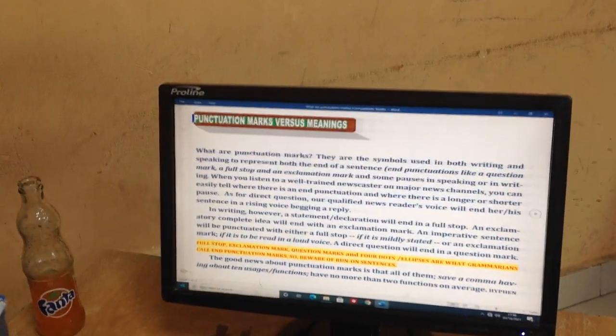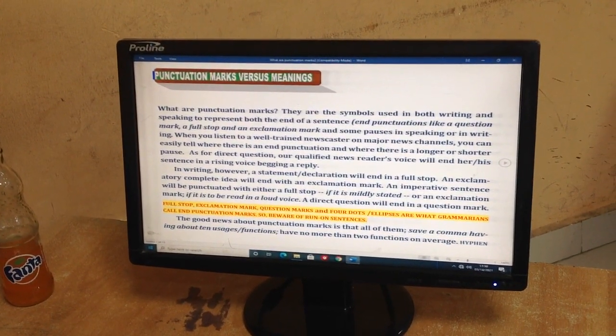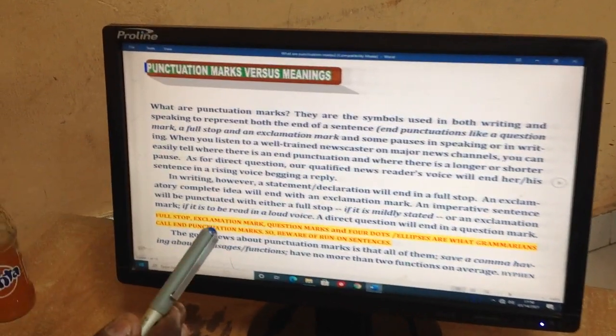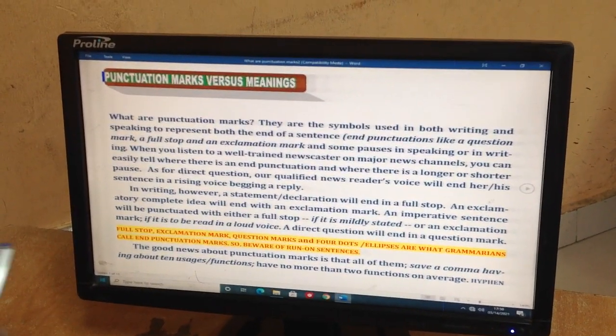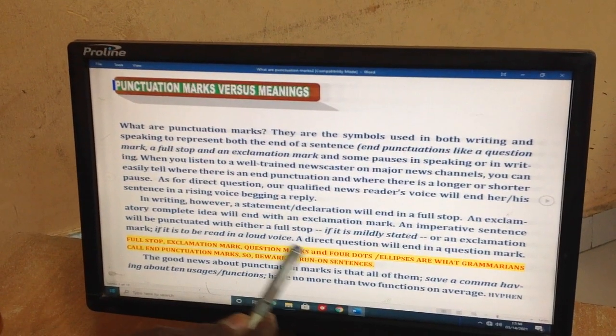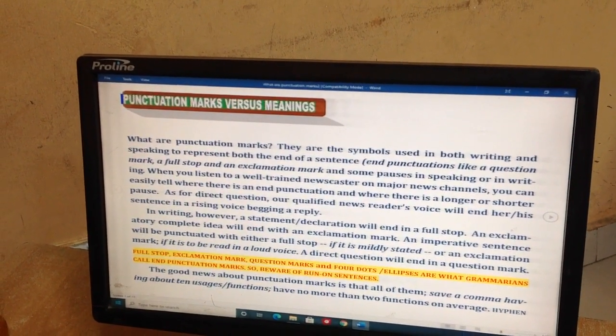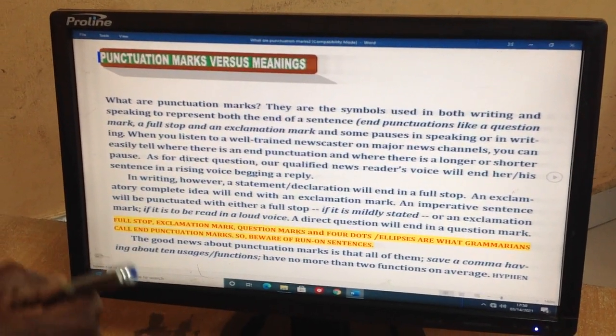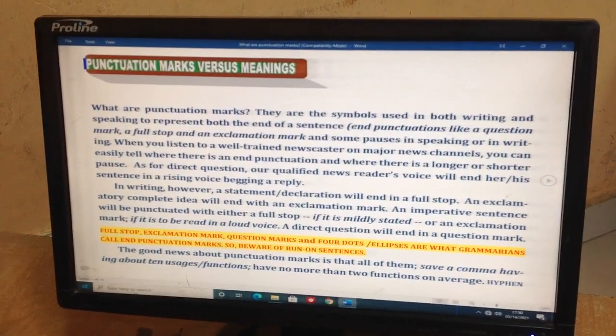The good news about these 12 or so punctuation marks is that most of them, we exclude commas, have two functions on average. For example, a hyphen can only be used in two cases: to form a compound word, as well as to cut words in syllabic parts. We can only cut an English word in syllabic parts. Any other cutting would be ungrammatical. I close the bracket.